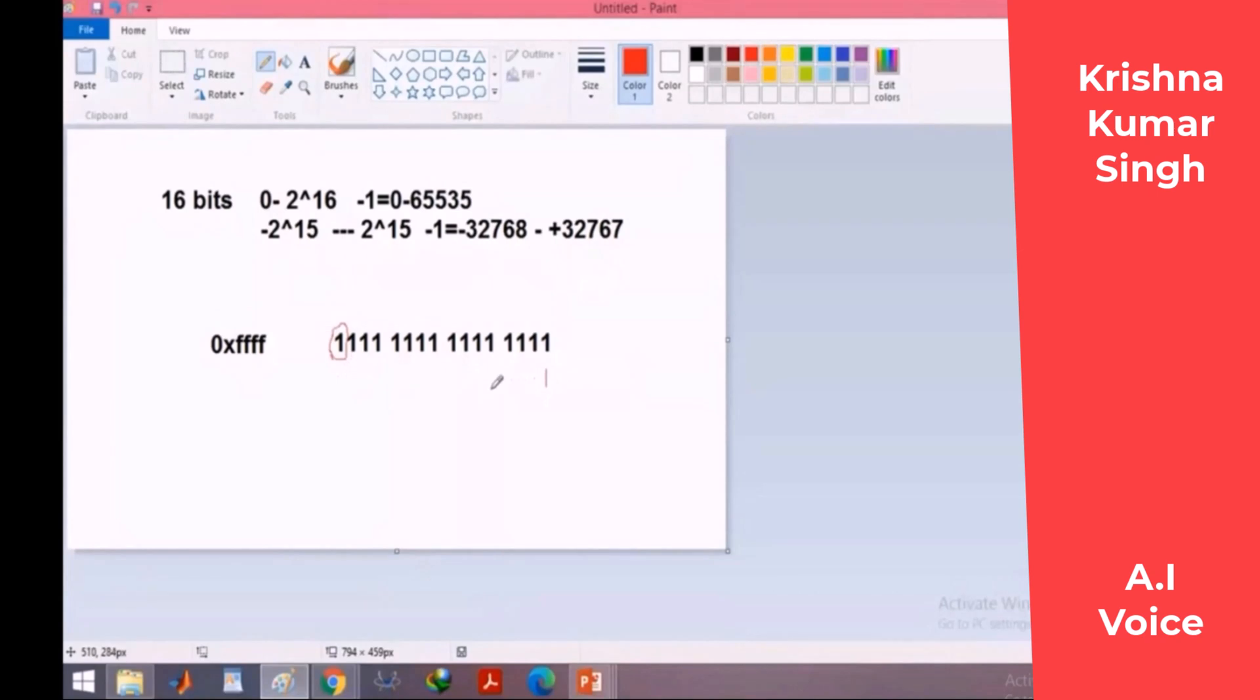So this number is minus 1. So F, F, F, F in hexadecimal can be interpreted as 65,535 or minus 1.